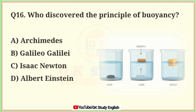Question number 16. Who discovered the principle of buoyancy? A. Archimedes. Correct answer is option A. Archimedes.